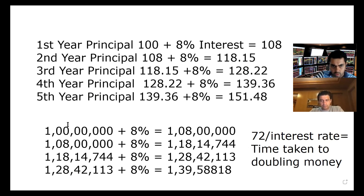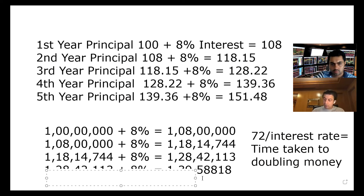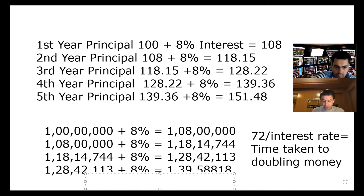1 crore put in a bond at 8% every year: you can see the compounding in action. At the end of the 4th year you have 1 crore 39 lakhs 58,818. The 5th year gives you 1 crore 51 lakhs 72,628.